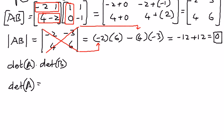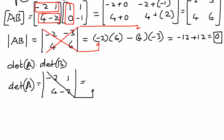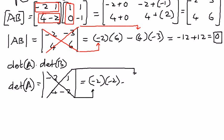The determinant of A: the elements of A are negative 2, 1, 4, and negative 2. We multiply the major diagonal elements — negative 2 times negative 2 — then subtract the minor diagonal product — 4 times 1. Simplifying: negative 2 times negative 2 is positive 4, and 4 times 1 is 4 with a negative sign, so 4 minus 4 equals 0.